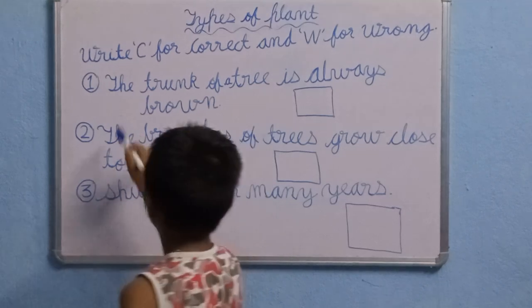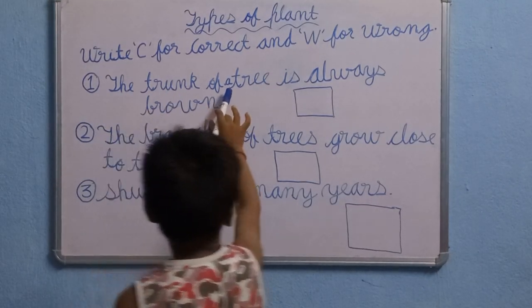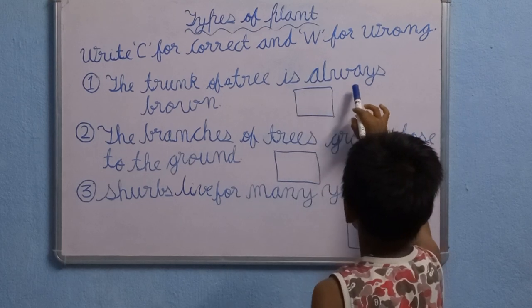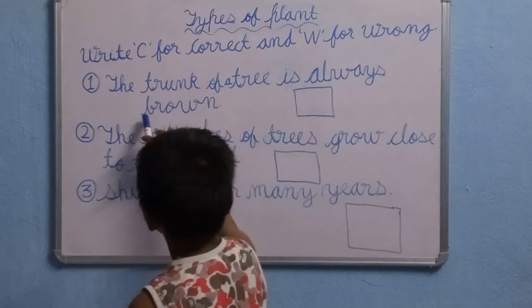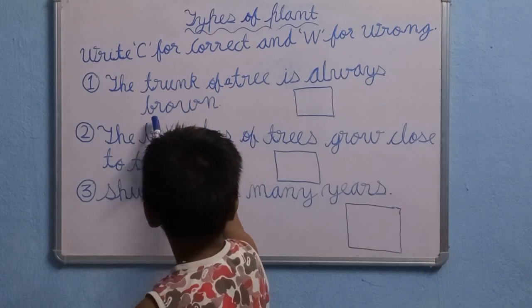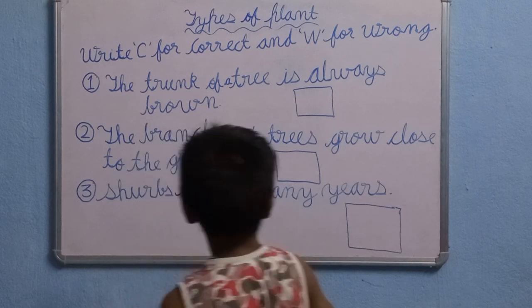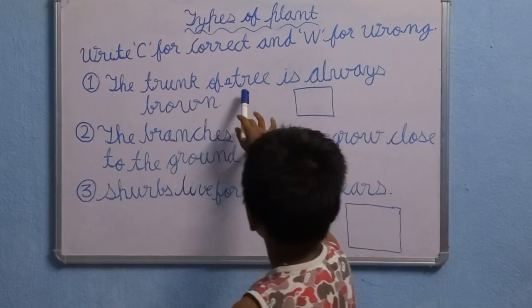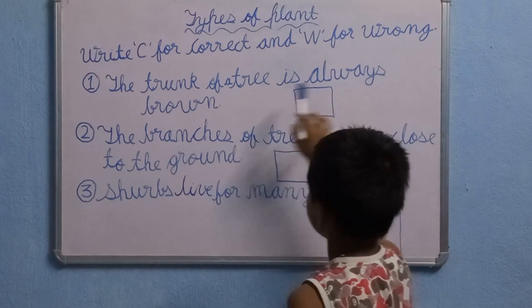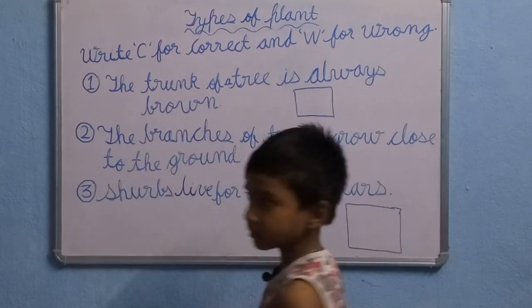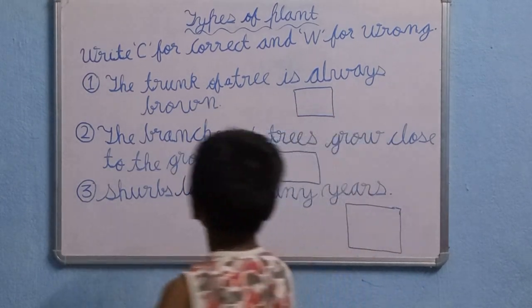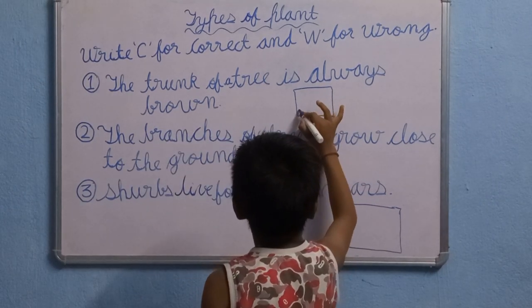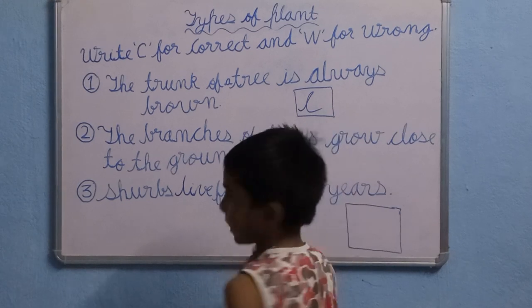Let's start. The trunk of a tree is always brown. This is correct — C for correct.